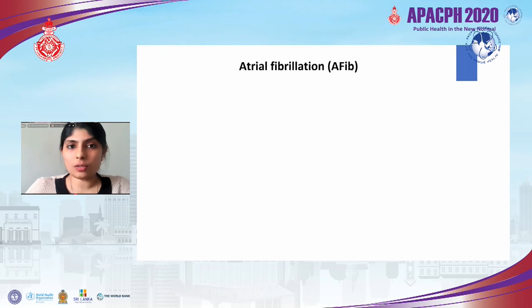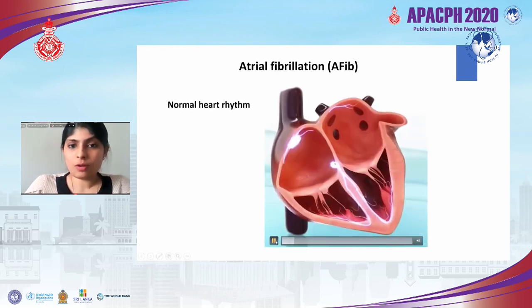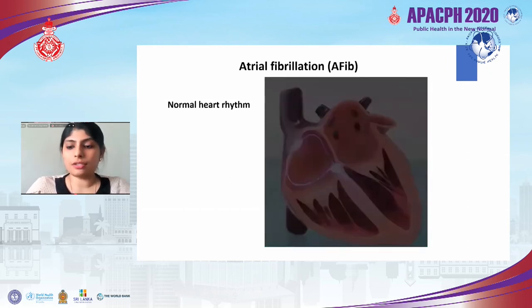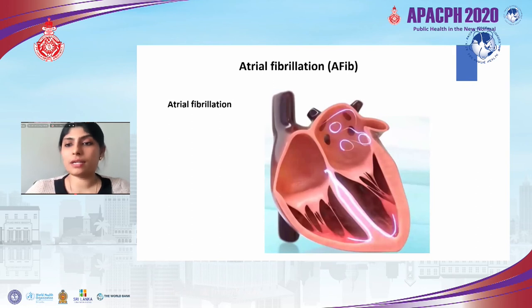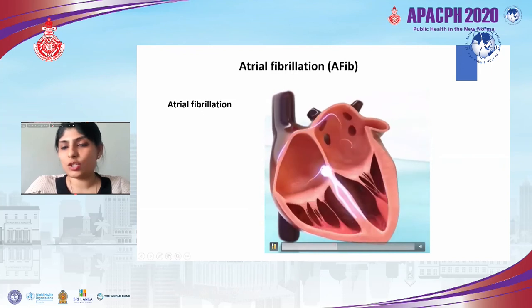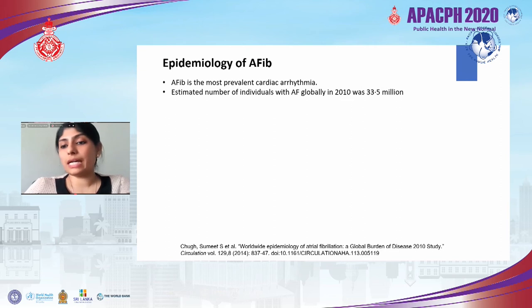What is atrial fibrillation? In a normal heart rhythm, there is synchronous contraction between the atria and ventricle. In atrial fibrillation, there is asynchronous contraction and signals from the atria — the atria and ventricle are not in rhythm — which can lead to many complications. AFib is the most prevalent cardiac arrhythmia known in clinical scenarios. It is estimated that around 33.5 million people were living with AF globally in 2010, and the number is predicted to increase, partly because AF can present in asymptomatic form.